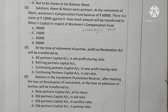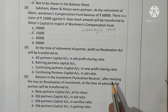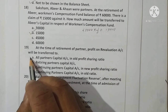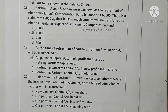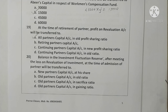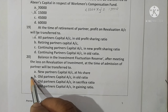Question nineteen: at the time of retirement of a partner, profit on revaluation account will be transferred to all partners' capital accounts in old profit sharing ratio. Option A is correct. Question twenty: the balance of investment fluctuation reserve after meeting the loss on revaluation of investment at the time of admission of a partner will be transferred to old partners' capital accounts in the old ratio. Option B is correct.